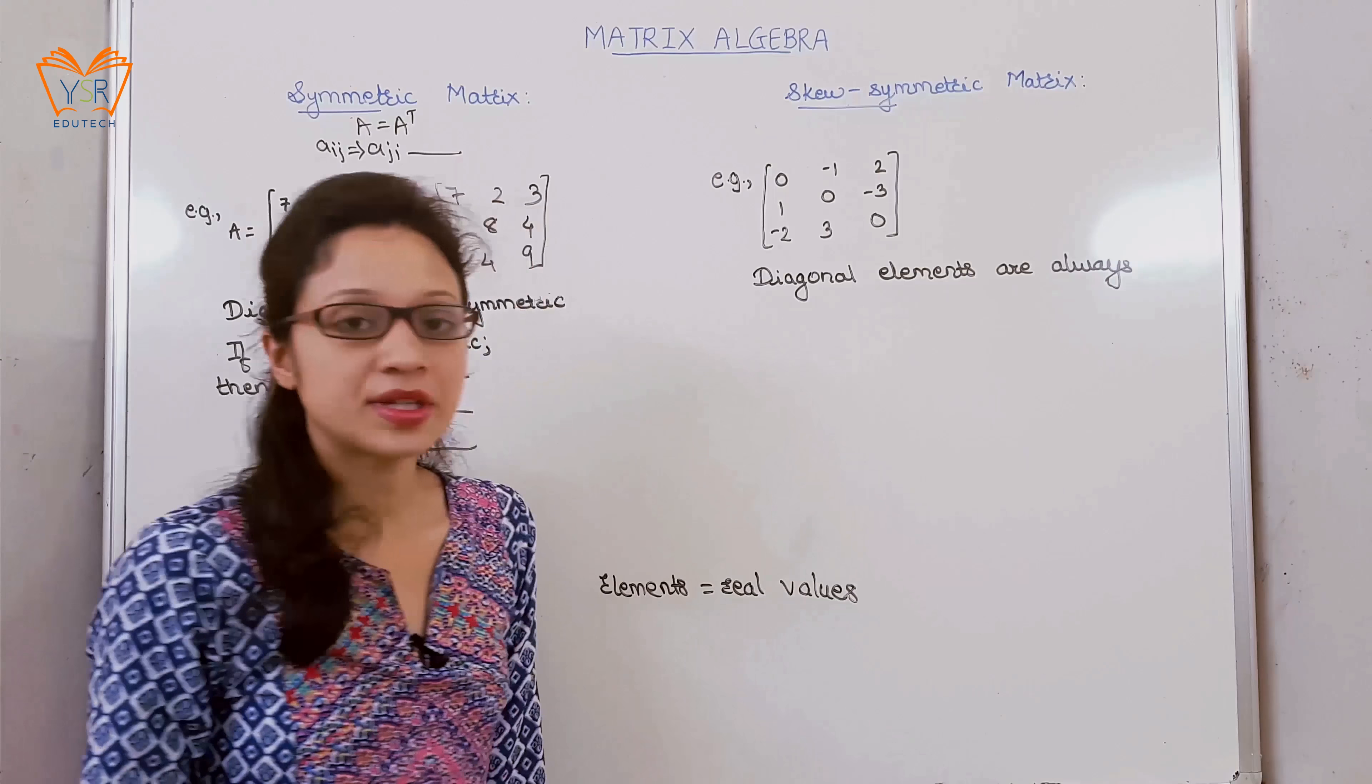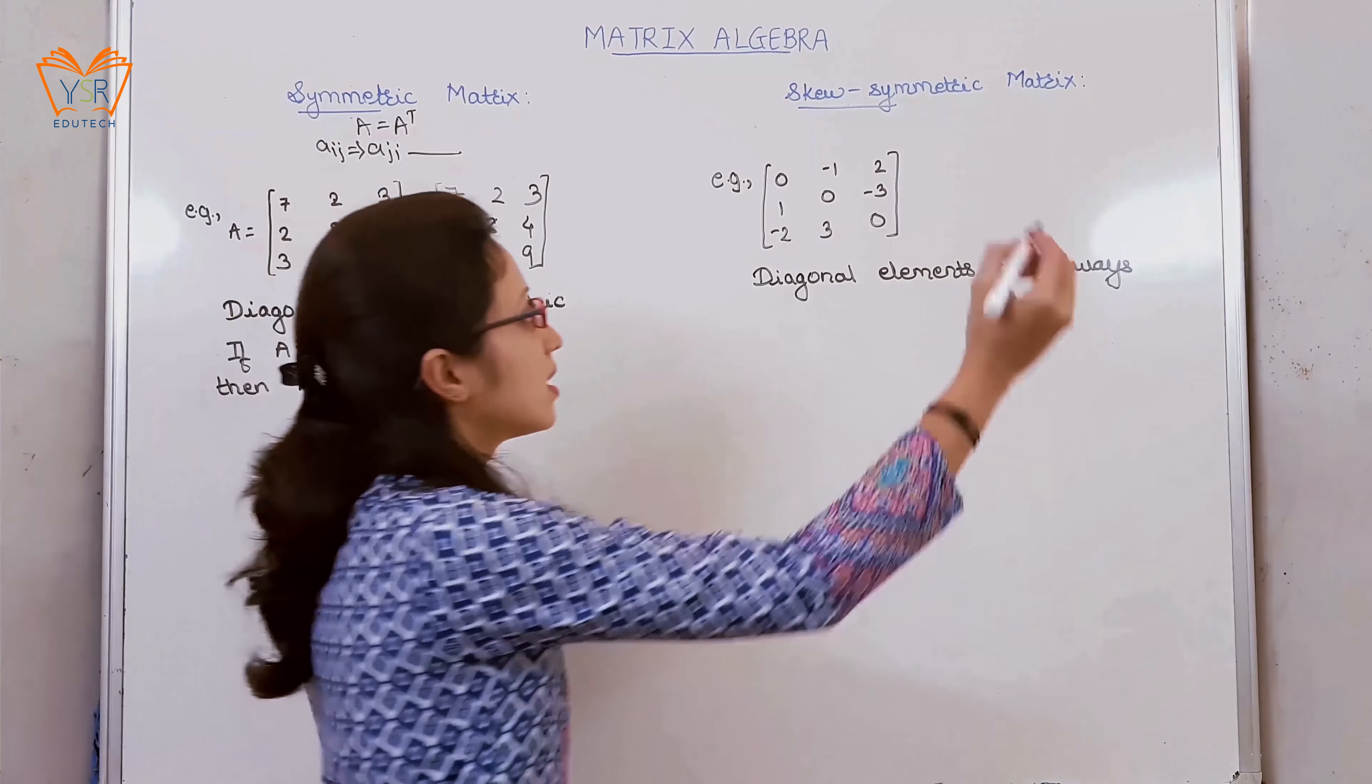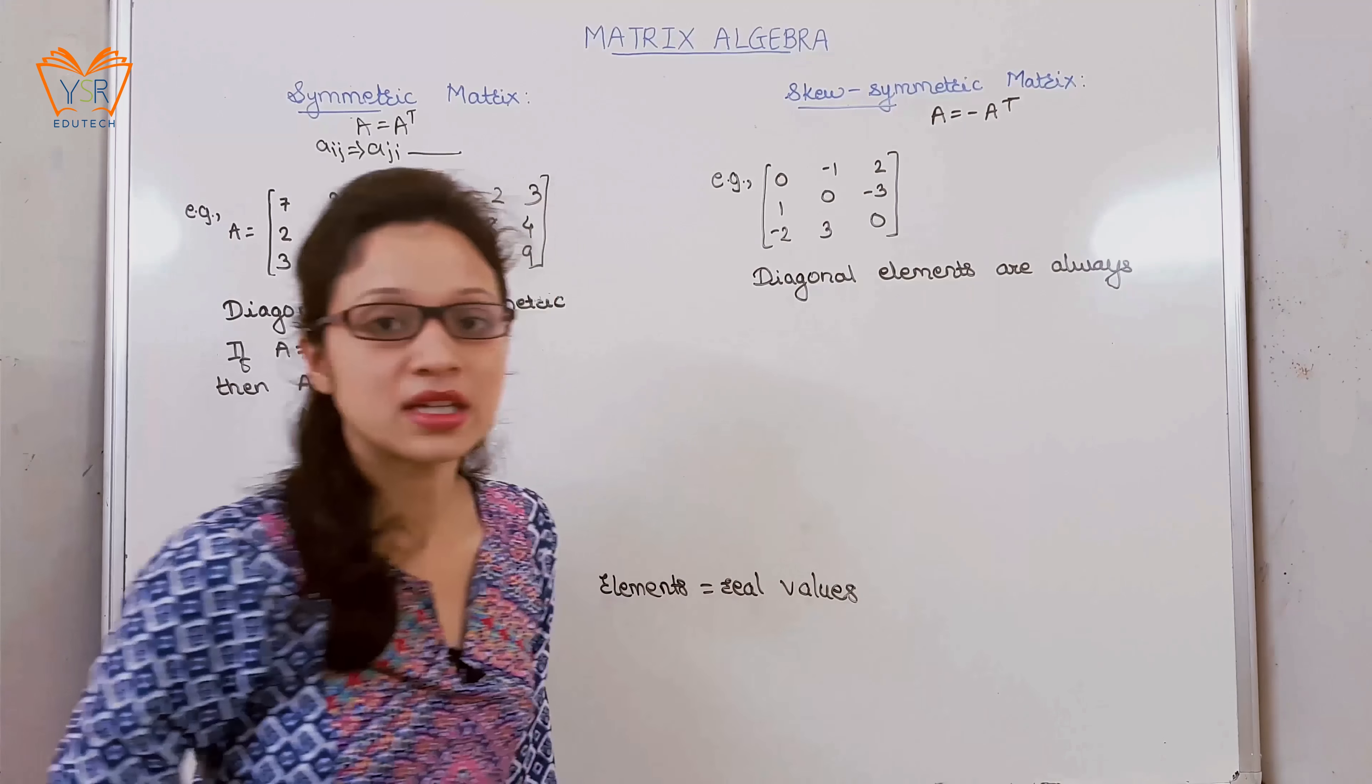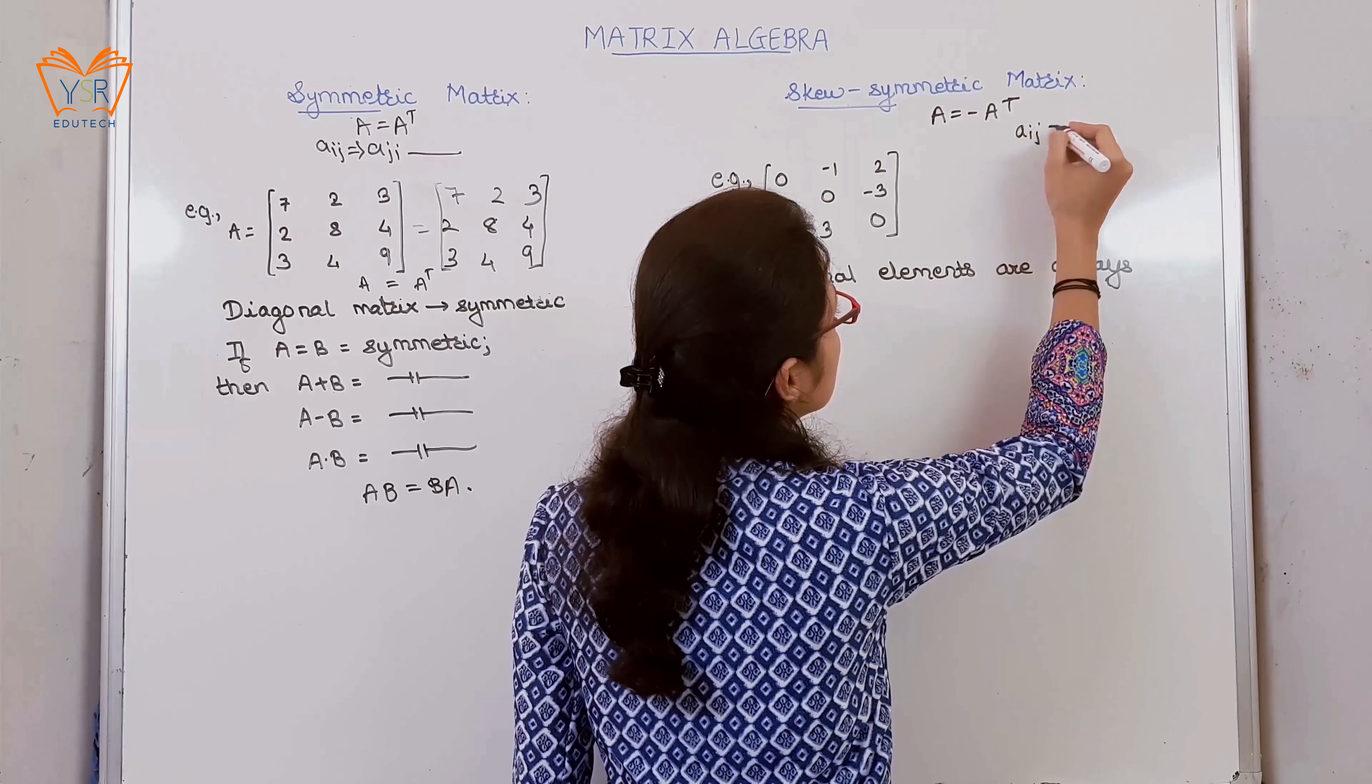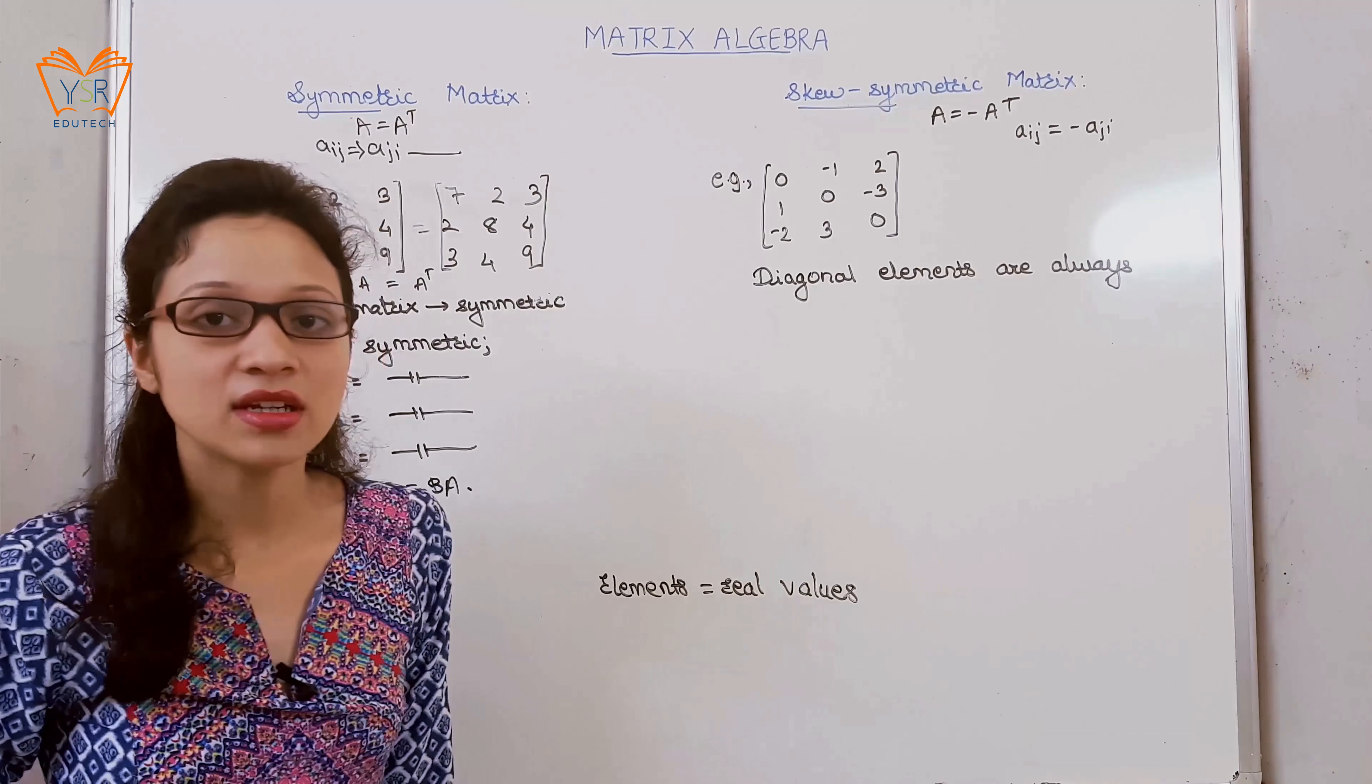Next, skew-symmetric matrix. Any square matrix is said to be skew-symmetric if A is equal to minus A^T, that is, negative of its transpose. So we can write A_ij is equal to minus A_ji for all i,j values.